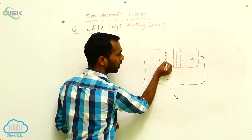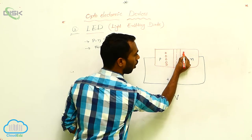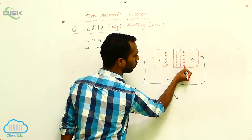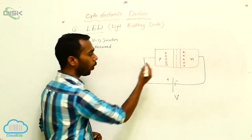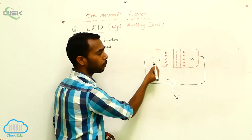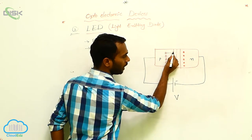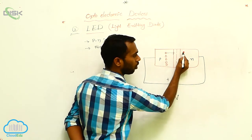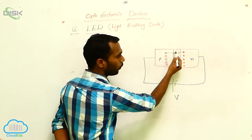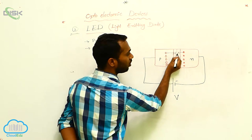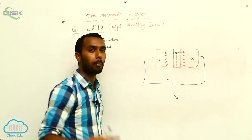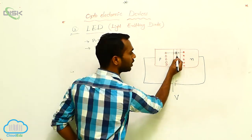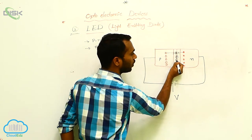P means holes are majority charge carriers; N means electrons are majority charge carriers — negative type means electrons. Then what happens? These holes are repelled by the positive terminal. Because of the repulsion process, the hole is moving toward the junction. Similarly, because of the negative terminal of the battery, the electron is repelled towards the junction. Hole is moving, electron is moving — these holes and electrons recombine.